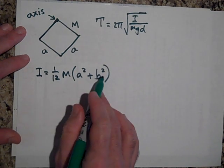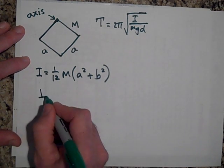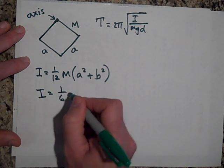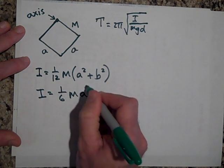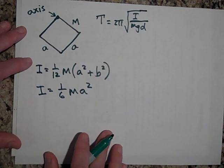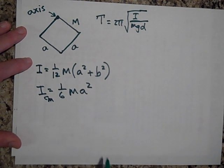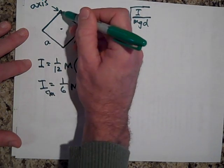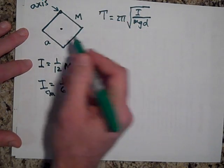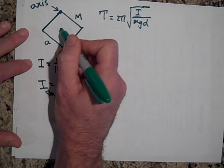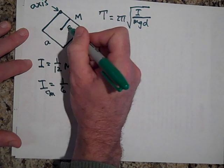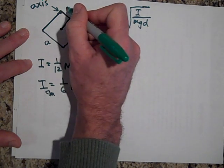That's the I through the center of mass, but we're not through the center of mass. We're a distance removed from that. If this is a over two and this is a over two...